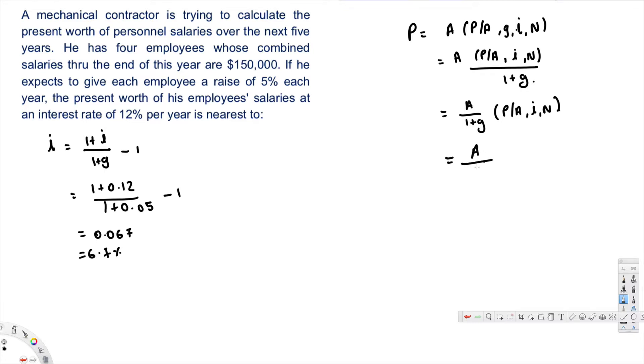Now this can also be written as A over (1+g) times [(1+i)^n - 1] over [i times (1+i)^n]. Now this is the one we are going to use right here.